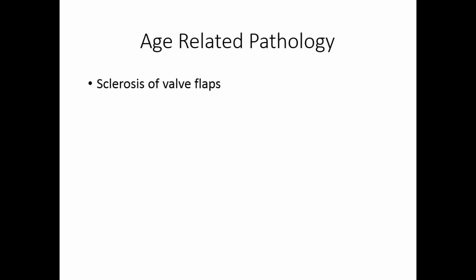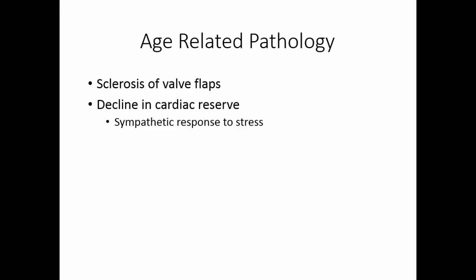As you age, sclerosis of the valve flaps may occur — they thicken and become less flexible, so heart murmurs develop. There is a decline in cardiac reserve so that during exercise or periods of high demand you just don't have the capacity. Cardiac muscle becomes damaged over time, and since we don't replace it with cardiac muscle but rather fibrous connective tissue, the heart may develop fibrotic areas. Myocardial infarctions and ischemia increase this. There is also atherosclerosis — a buildup of plaque inside blood vessels making them narrower — and calcium deposits in the smooth muscle of blood vessels making them less elastic.